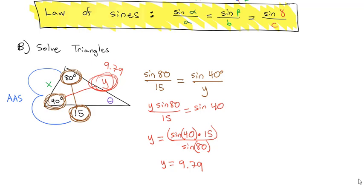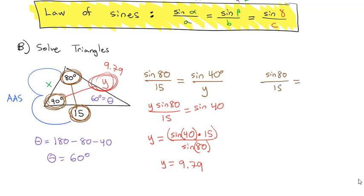We can find x in much the same way, but first we need to know what its opposite angle is. Theta equals 180 minus 80 minus 40, so theta is 60 degrees. Using the Law of Sines, we'll still use the pieces we knew — sine of 80 over 15 — and set that equal to the pieces we don't know: sine of 60 over x.